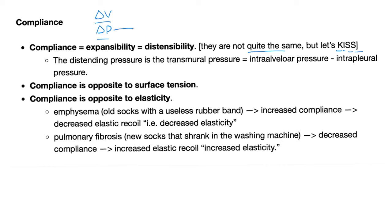What delta P are we talking about? The pressure that actually distends the lung, also known as transmural pressure. Transmural pressure is intraalveolar pressure minus intrapleural pressure. Transmural pressure was equal in amount to the intrapleural pressure but had the opposite sign — transmural pressure is positive, intrapleural pressure is negative. So if the intrapleural pressure was negative 5, the transmural pressure is going to be positive 5: same amount, different sign.